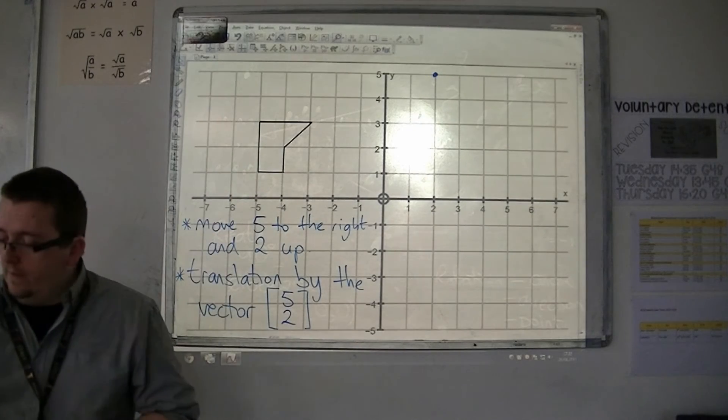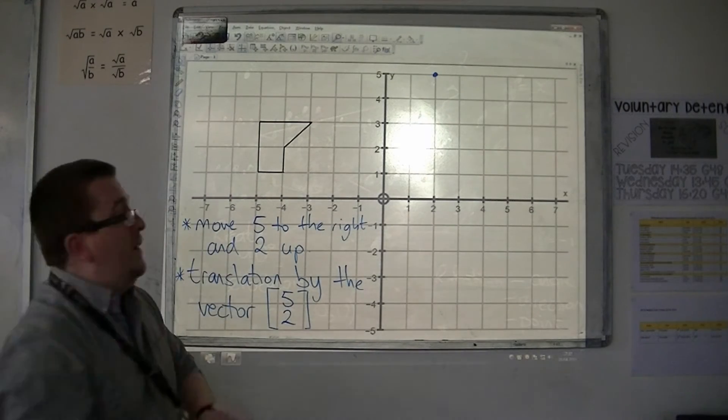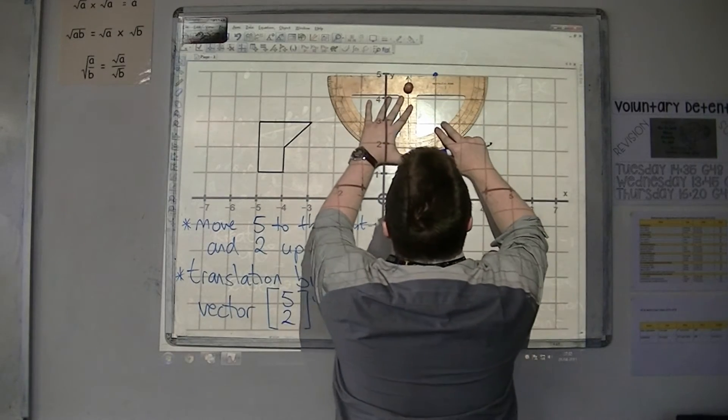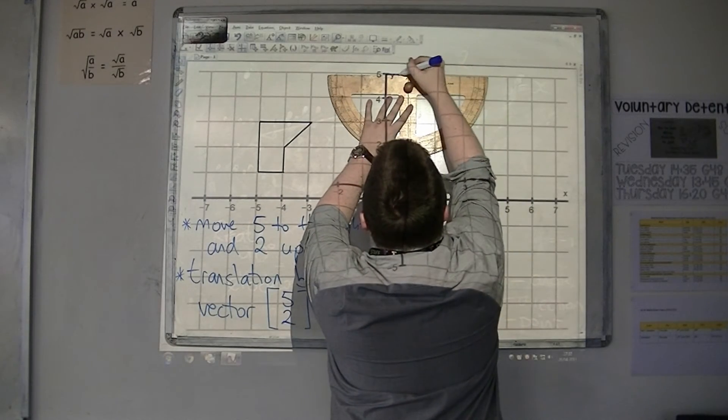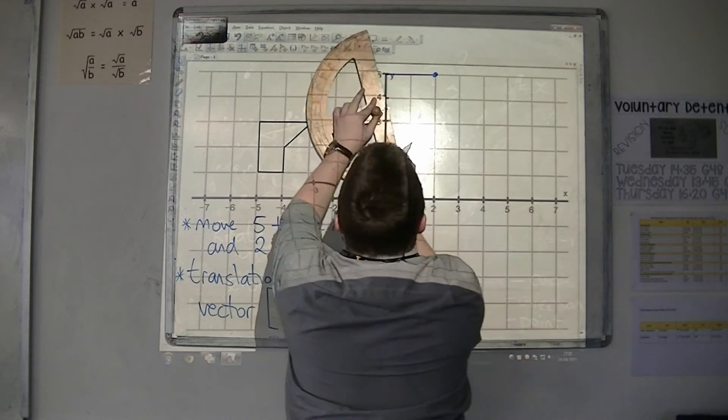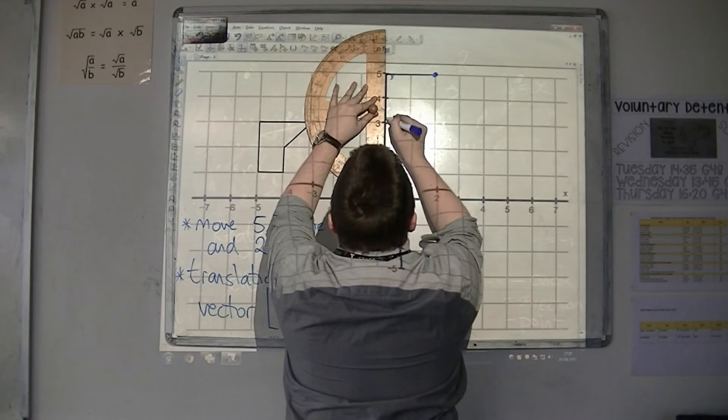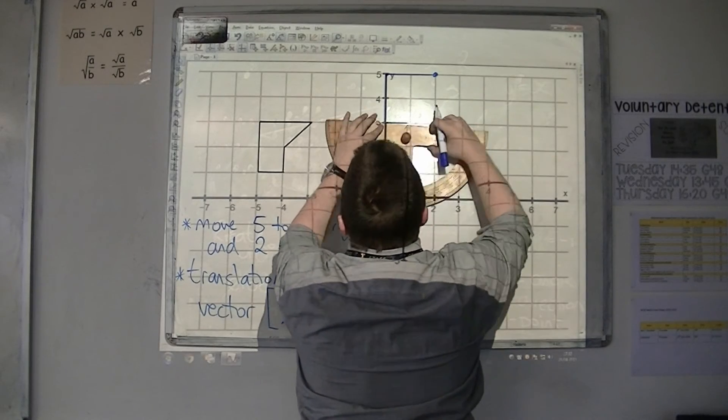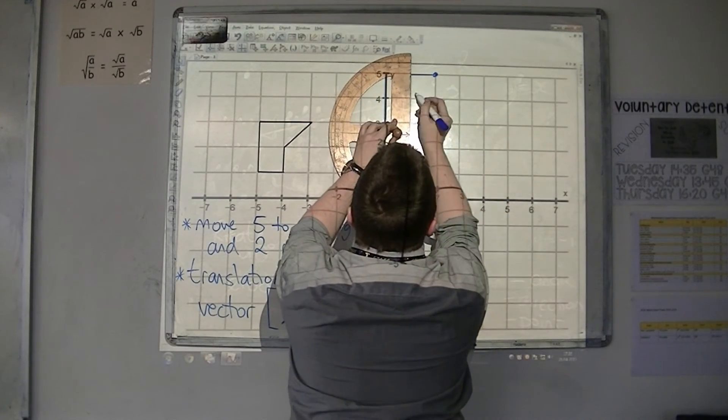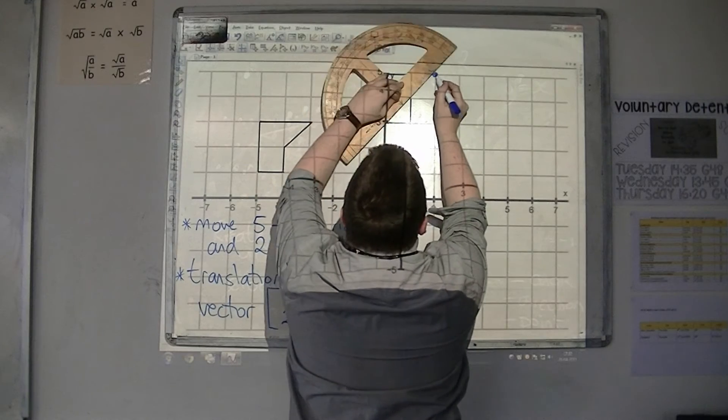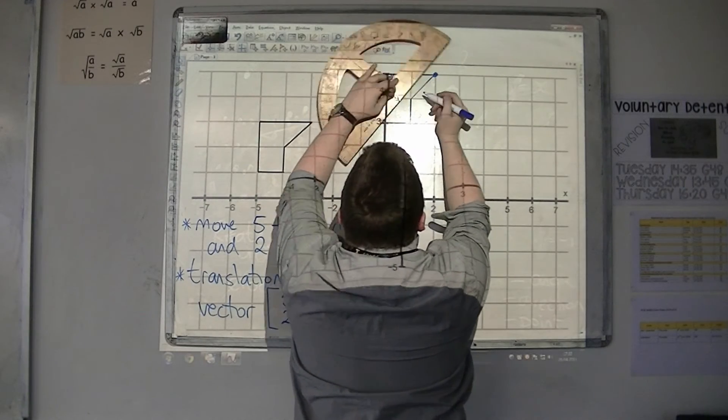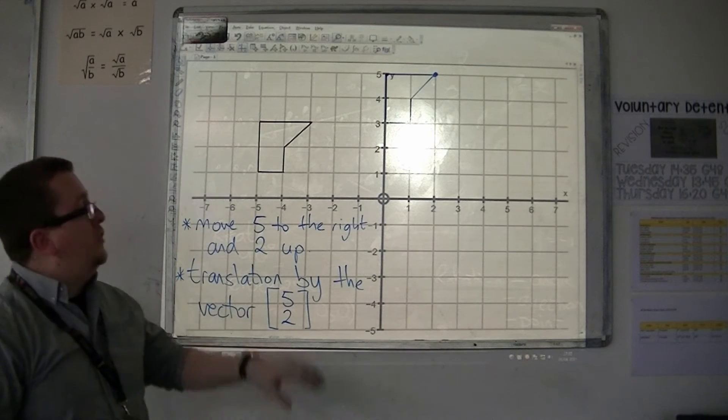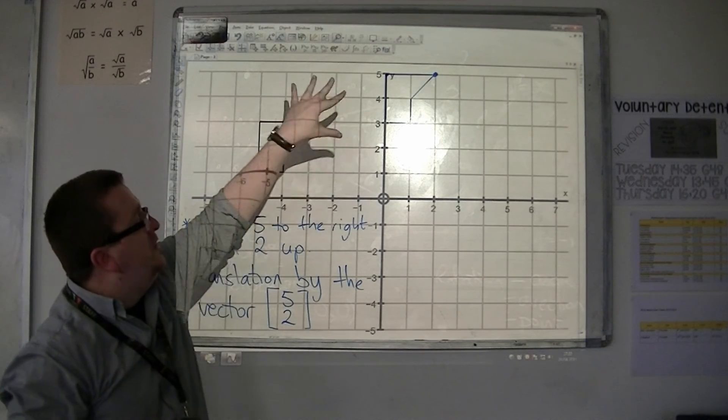So from that, I can now draw the rest of the shape, because I know what the shape looks like. So I just copy what the shape looks like up here. So that would be my answer. So I've just moved it five to the right, and two up.